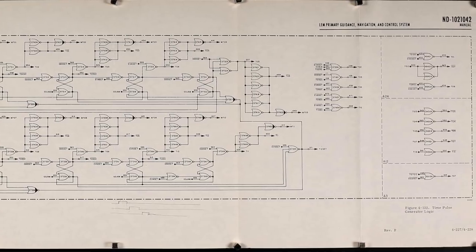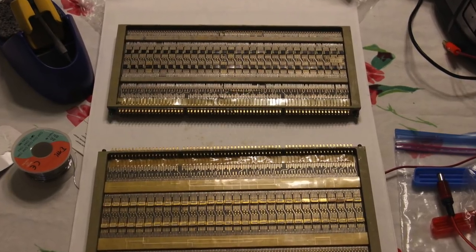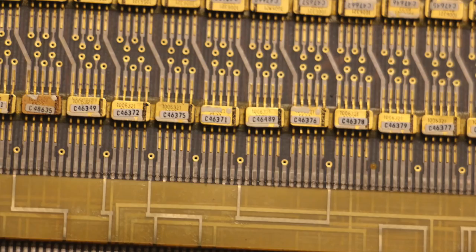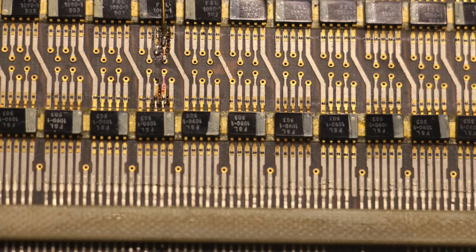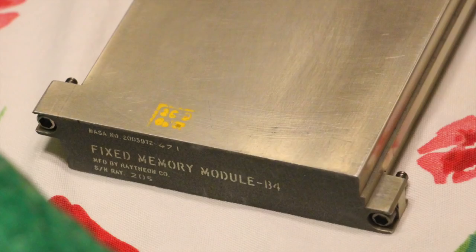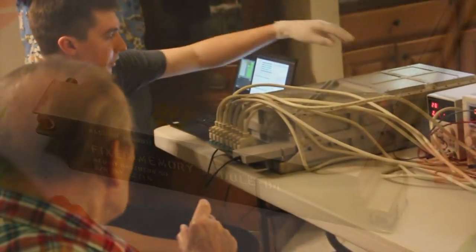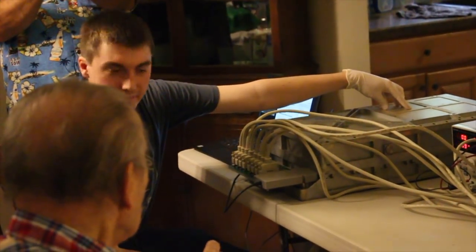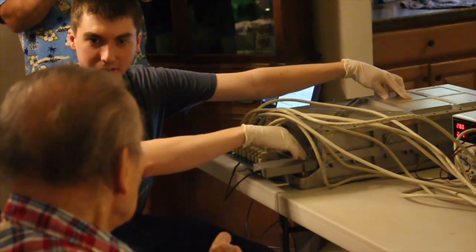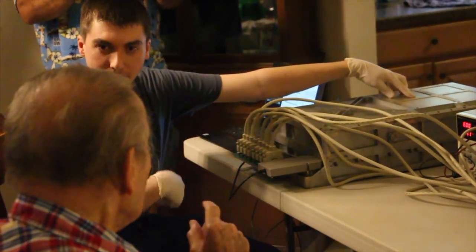He also has some very early Block II prototype modules in a format I had never seen before. And most importantly, he has one core rope module that he is going to let us read after the demo. These are just rope simulator boxes, but I'm using the test connector as a core rope simulator.